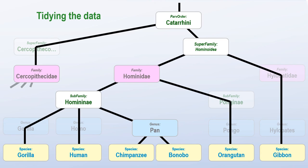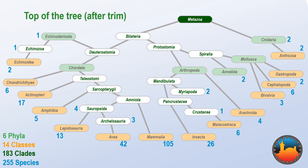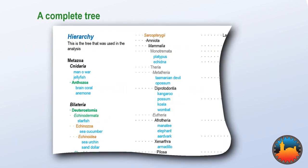Selecting the NCBI data related to the 255 MetaZoa species, then removing nodes that just have a single child, gives us a list of 437 nodes. Here is what the top part of that tree looks like. The biggest classes are the mammals, the birds, the insects, the bony fish, and the reptiles. Here is the start of the whole list in text form.